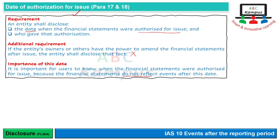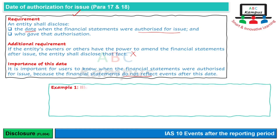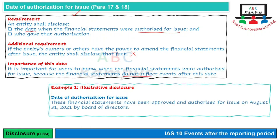इस disclosure को financial statements में किन words के अंदर लिखा जाता है उसके लिए illustrative disclosure बनाते हैं Example 1 के तौर पे। Notes to the financial statements में एक heading दे देते हैं: 'Date of Authorization for Issue'। यह normally second last या third last note होता है। उसमें simply लिखते हैं: 'These financial statements have been approved and authorized for issue on August 31, 2021 by board of directors.' Date भी बता दी और किसने authorization दी वो भी। Additional requirement पाکستان में apply نहیں होتی.